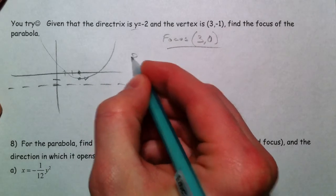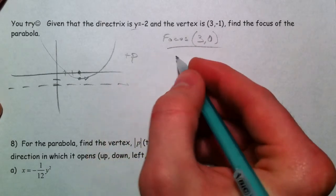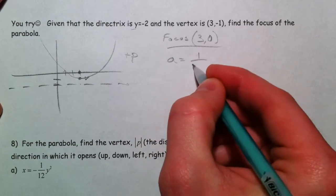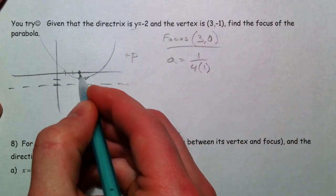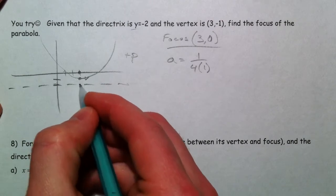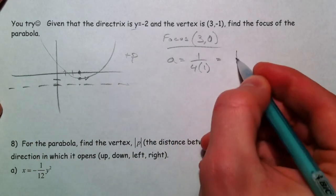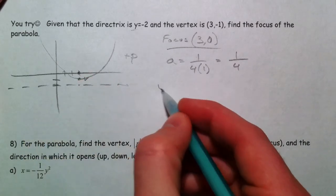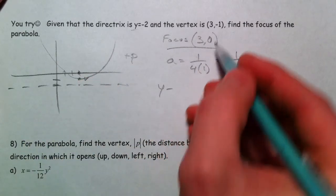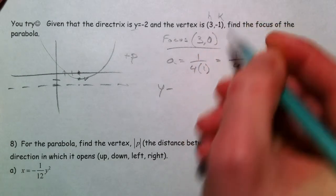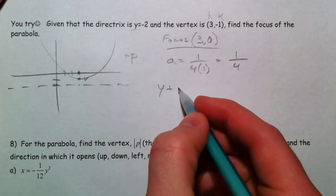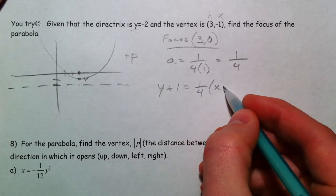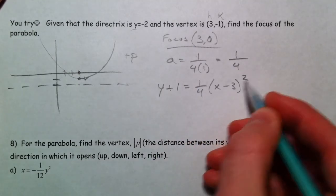The p is positive. And, it's going to be 1 over 4 times 1. Because the distance from the vertex to the focus and the vertex to the directrix is 1. So 1 over 4. It's an x squared equation again. So y minus h and k. So it's actually y minus a negative 1. So y plus 1 equals 1 fourth times x minus 3 squared.